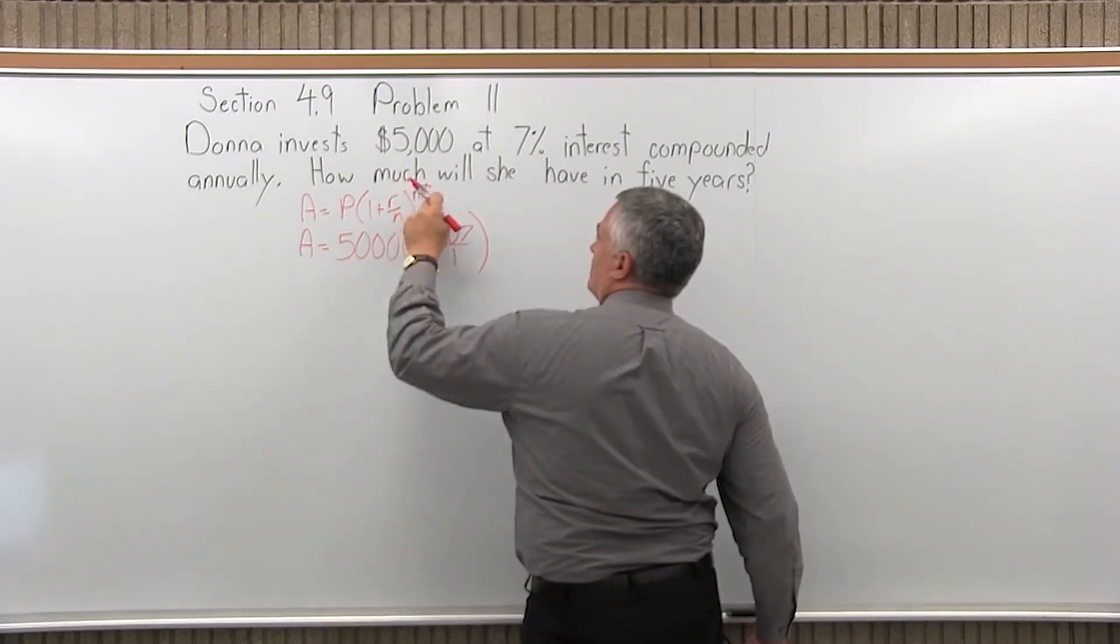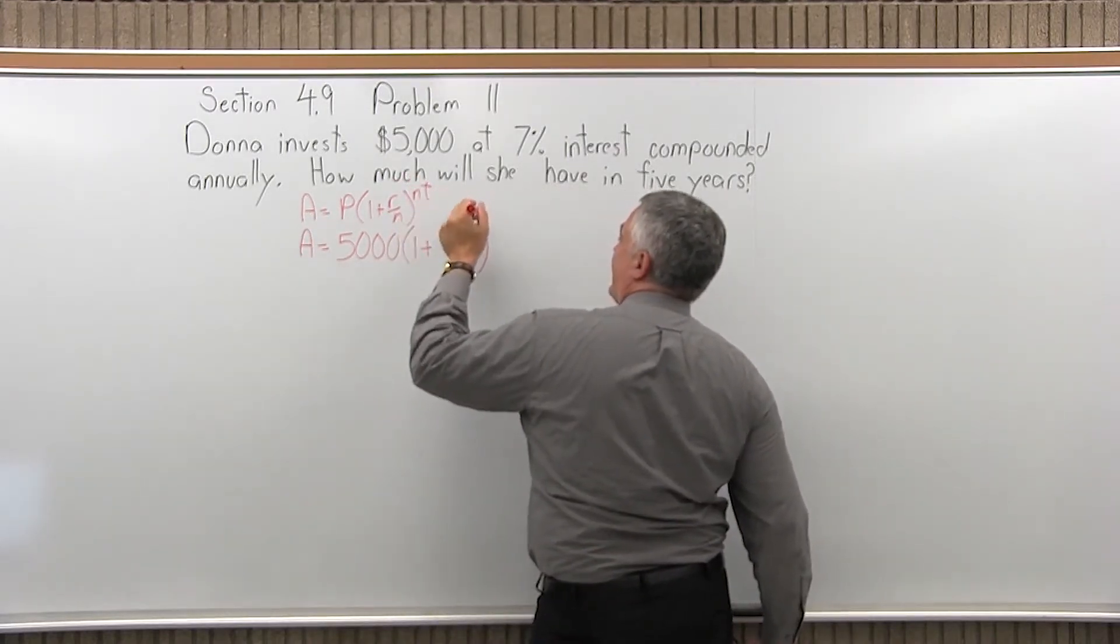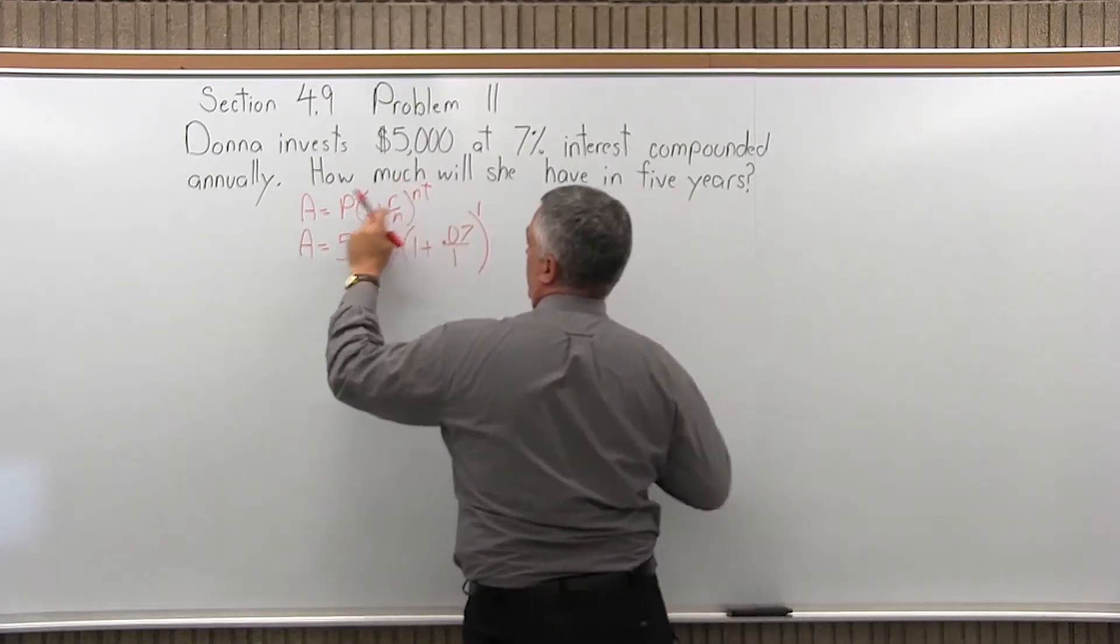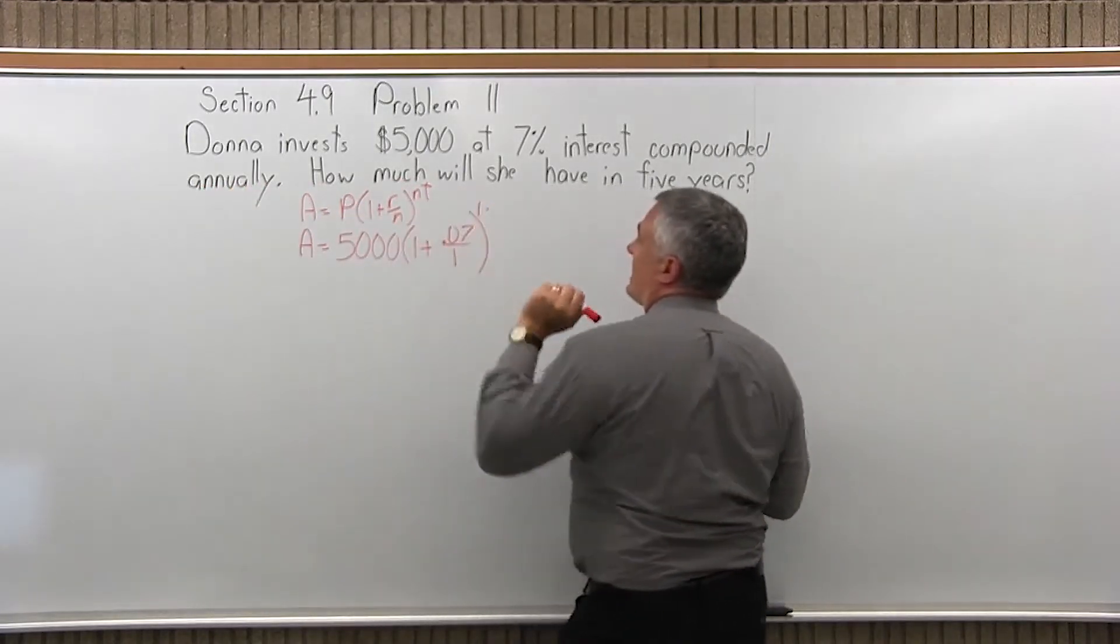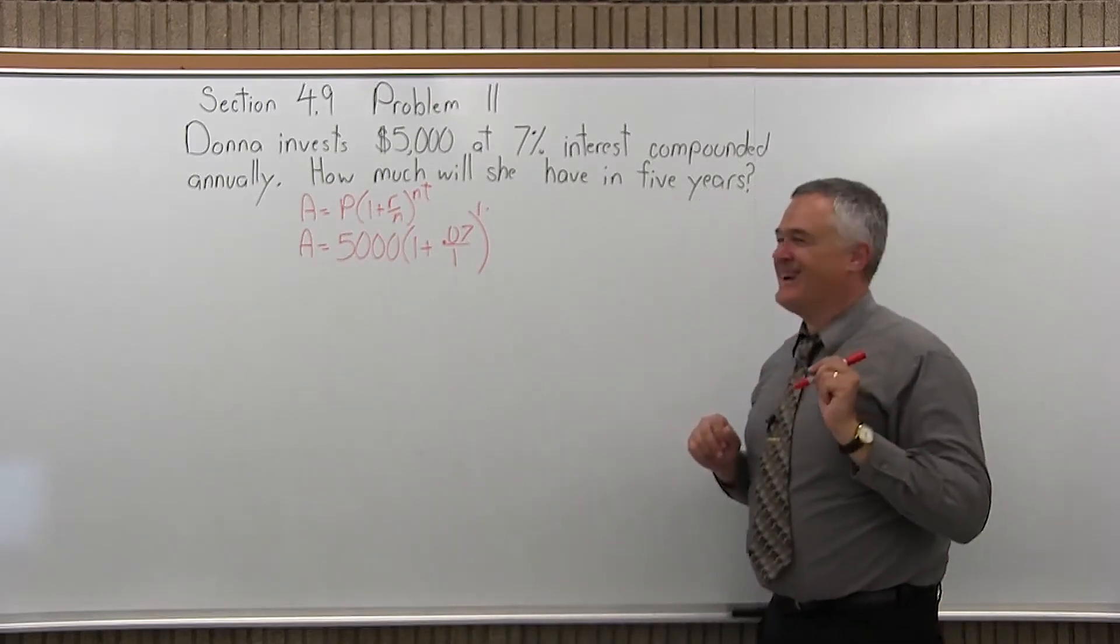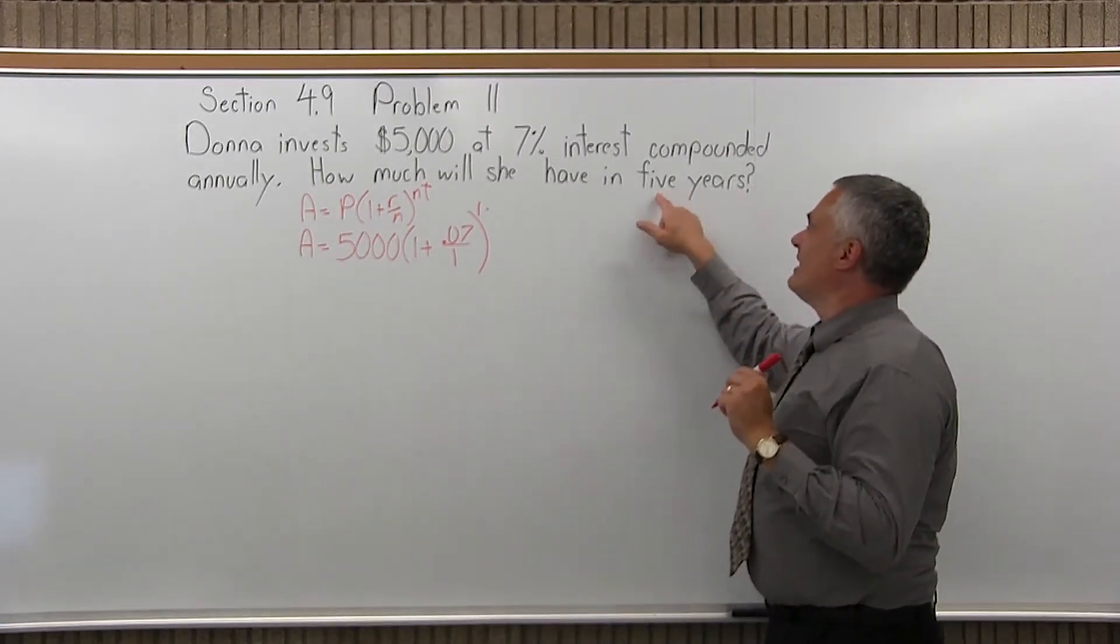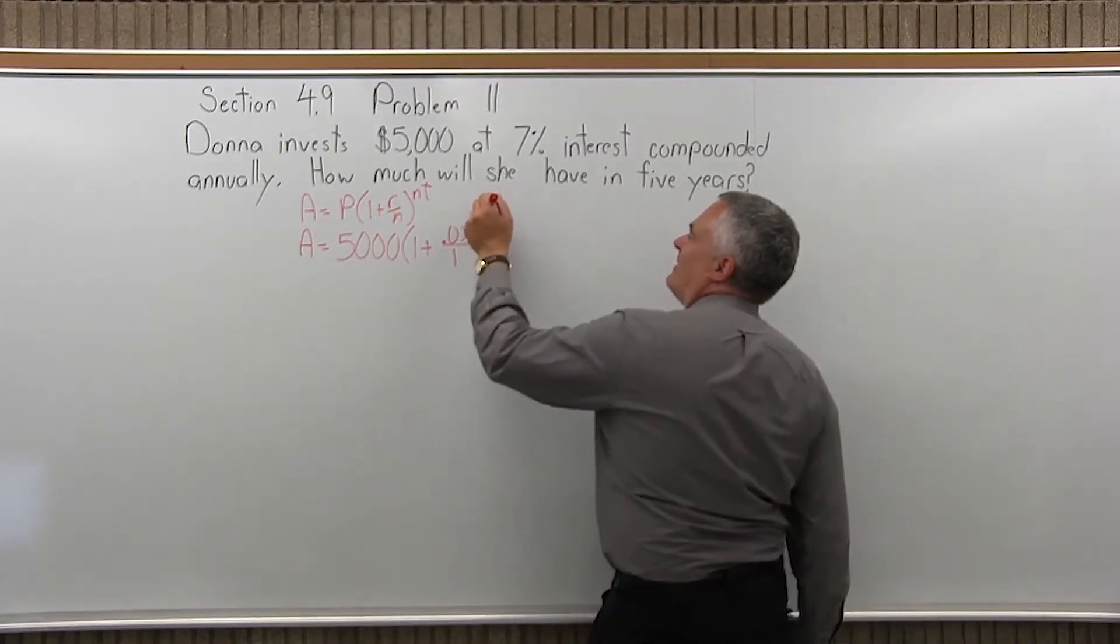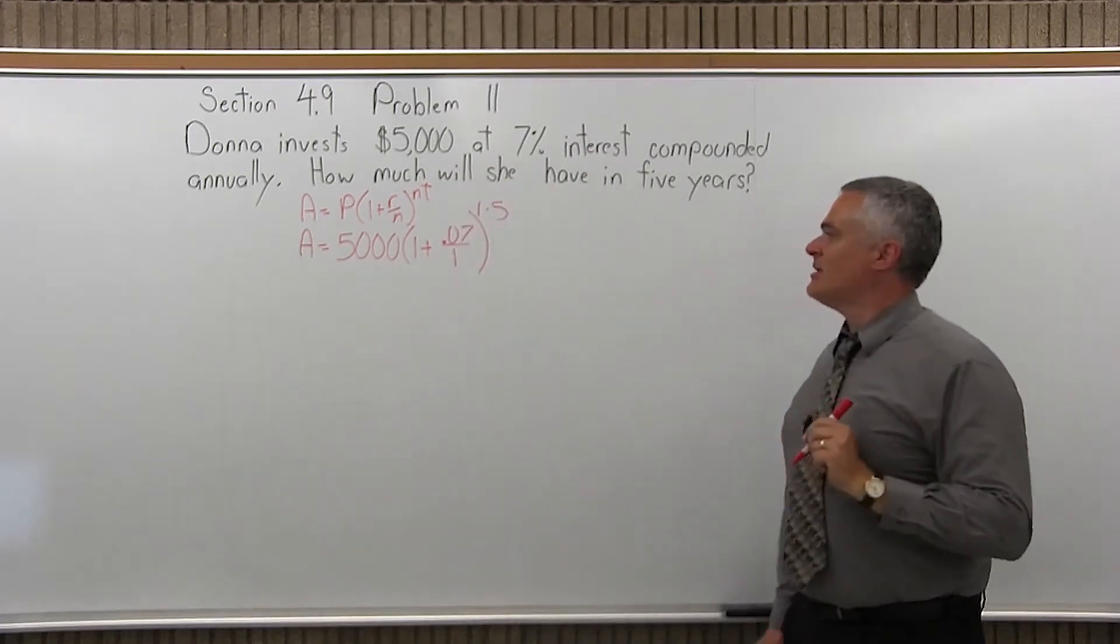And now my exponent here, N times T. Again, N type of compounding for annual, N is 1. T is time in years, and T would be 5, time in years.